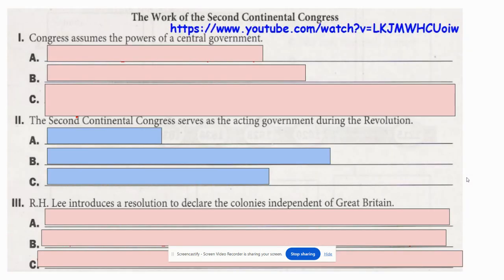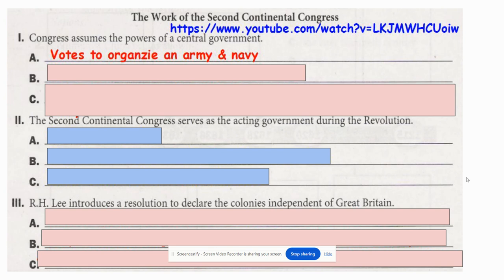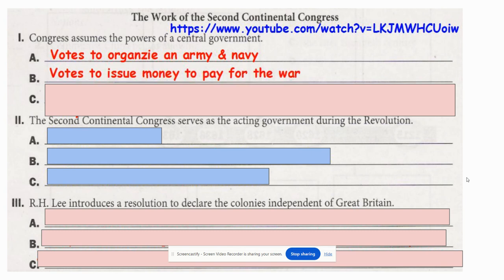Let's talk about the work of the Second Continental Congress, which meets shortly thereafter. Congress assumes the powers of the central government by voting to organize an army and navy. A lot of people in the army may have served in the French and Indian War, but more often they had no prior military experience. The navy was even more scruffy because we didn't have many ships, so we relied on privateers — people who owned ships we could borrow. We also had to vote to issue money to pay for the war.